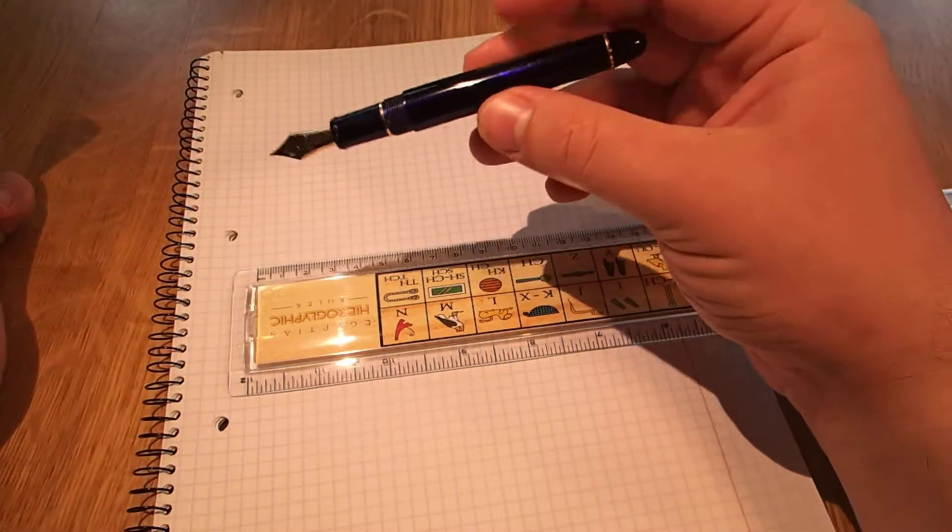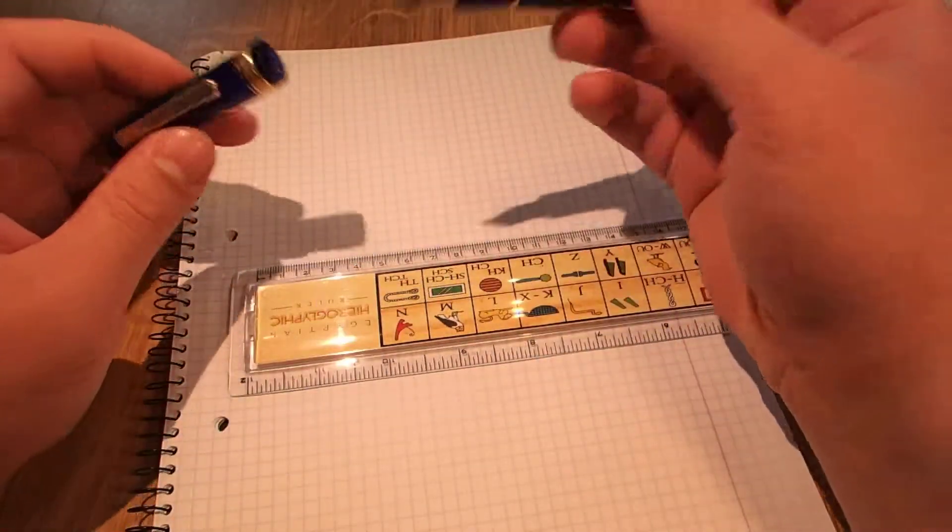The weight of the pen capped or posted is 25 grams, and when it's uncapped it's 15, so the cap is 10 grams on itself.